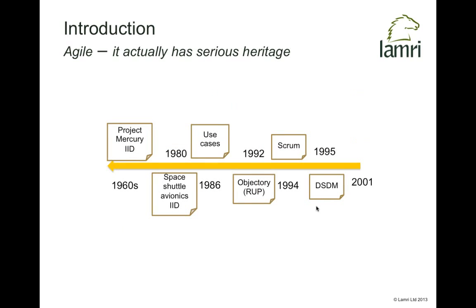Agile is often thought of as something relatively new, but the principles underpinning it go way back — actually to the 1960s. The Project Mercury program that put the first American in orbit actually used principles of iterative and incremental development to build some of the mission control software. There's a whole toolbox of techniques and approaches that have been explored over the years, all available for us to make use of in our development solutions today.